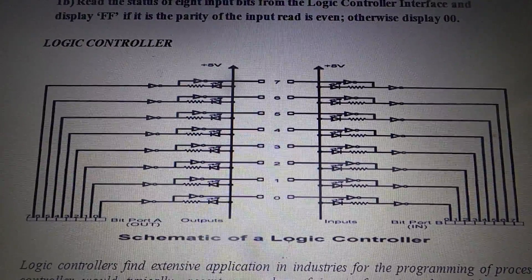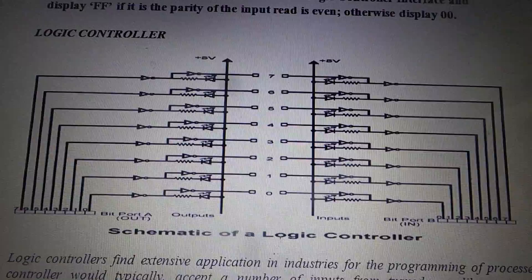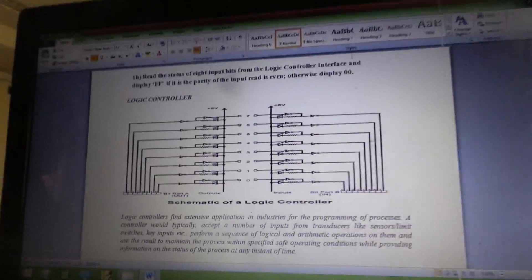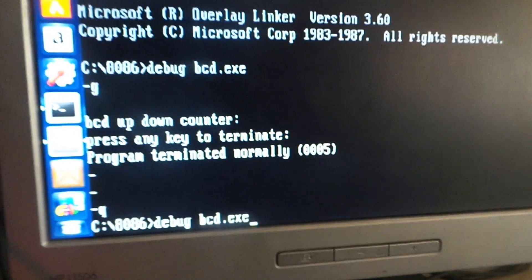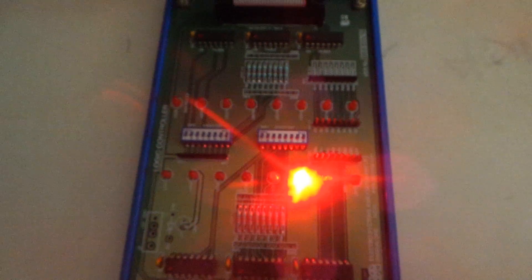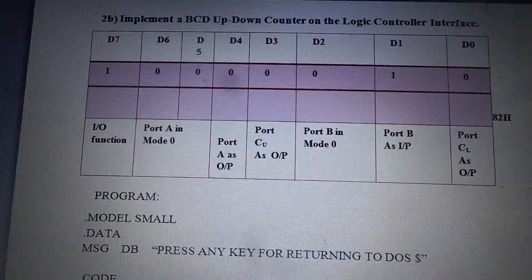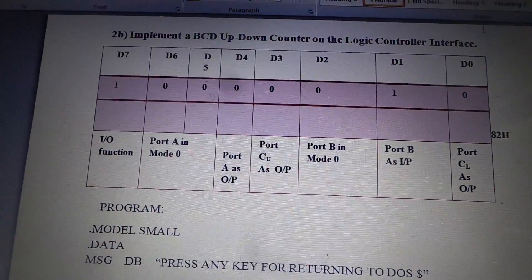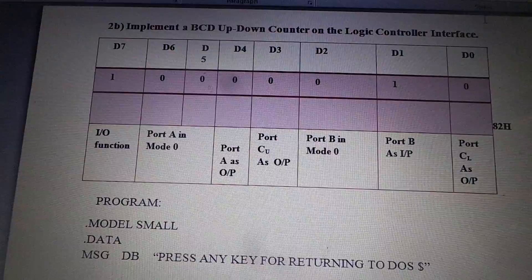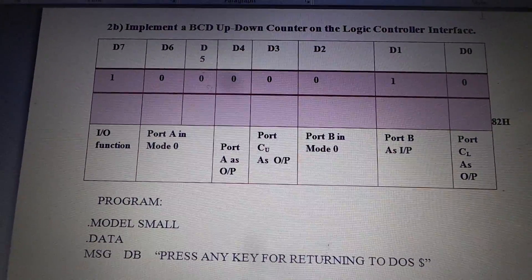So for this particular program, your control word will be 82H. Now we are going to execute the BCD up-down counter. As you can see, the control word here is 82H. We will now be coming back to the computer system to execute the program using the basic three commands: MASM, Link, and Debug.